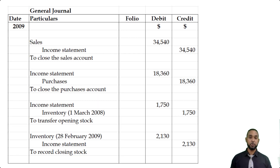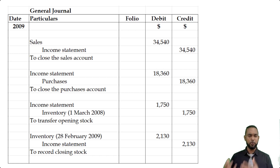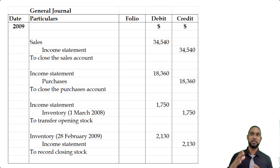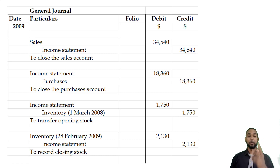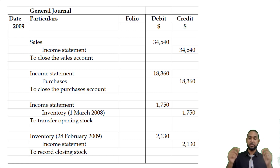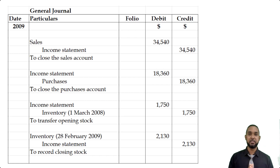Closing entries don't come up very often, especially in more recent times going into the 2010s and early 2020s. If you've seen this question before, let me know how you dealt with it in the comments below, and let me know if you were taught how to deal with closing entries. Now let's take a look at Part B, which has some regular T accounts, which should be a bit easier to digest.